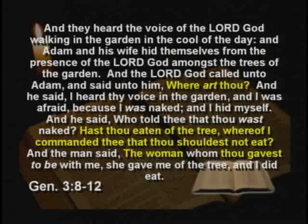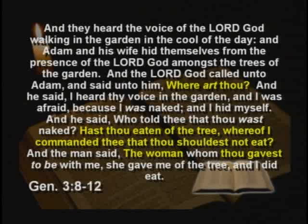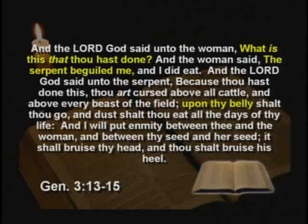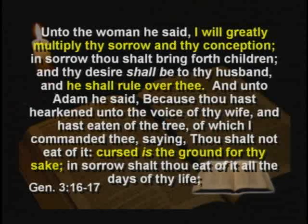Adam's first response was to pass the buck — 'The woman that you gave me' — essentially blaming both Eve and God. Eve similarly blamed the serpent. Finally both reluctantly confessed. God cursed the serpent to crawl on its belly. To the woman He said one of her curses was that the man would rule over her. To the man He said, 'I'm going to curse the ground for your sake.'